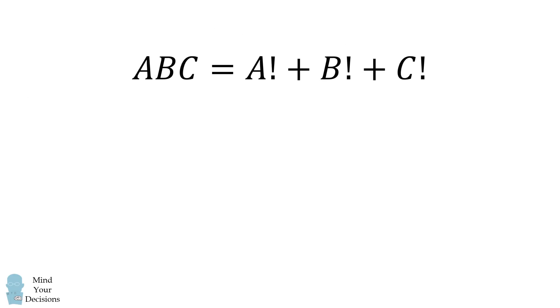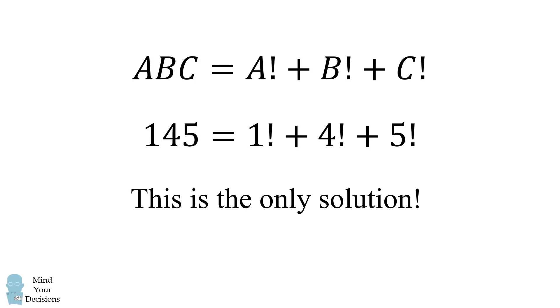So there you go. ABC is equal to A factorial plus B factorial plus C factorial. We get the result 145 is equal to 1 factorial plus 4 factorial plus 5 factorial and this is the only solution. Did you figure it out?